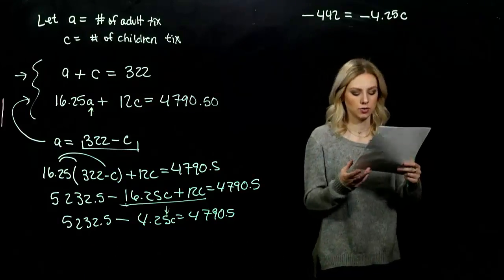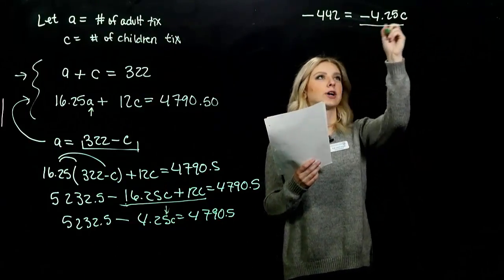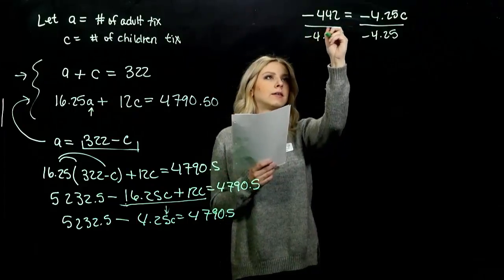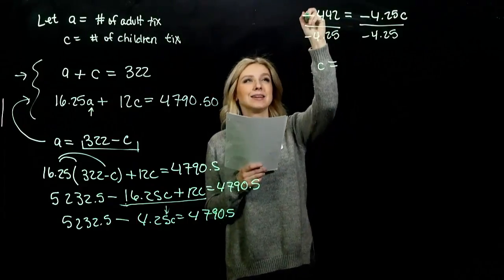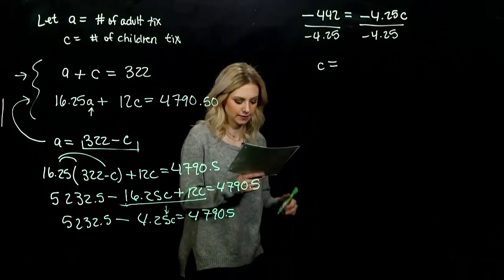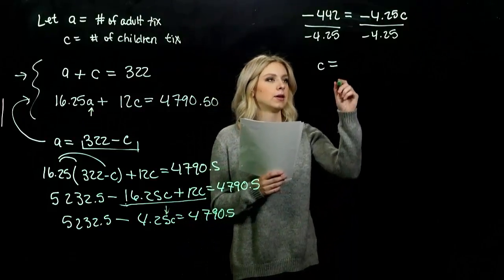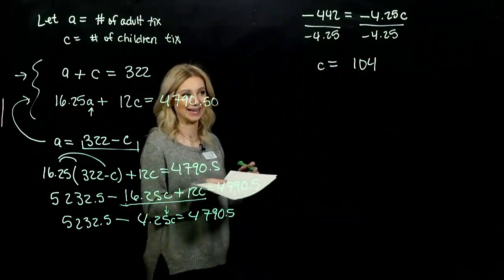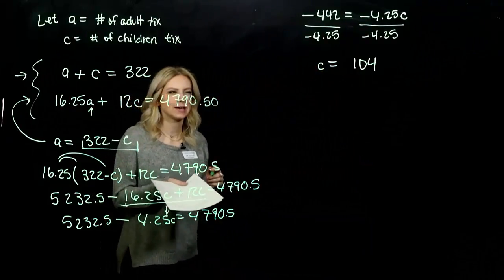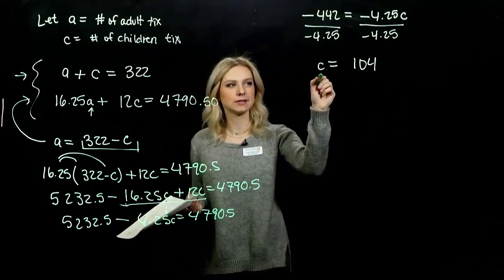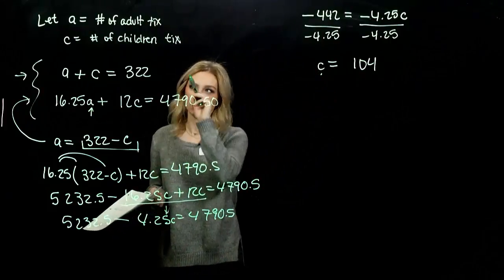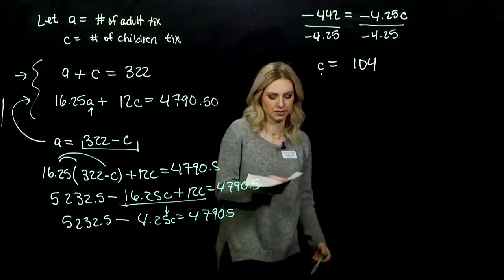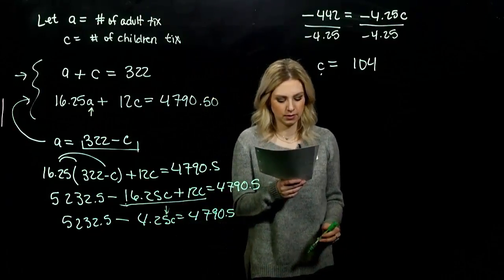So we want C on its own, what has to happen? Divide. So C is going to be positive. Negative divided by negative gives us a positive. And we're looking at 104, whole number, which is nice. So what does that tell us? The number of children's tickets that were sold, or the number of children that attended. So I know 104 kids attended.